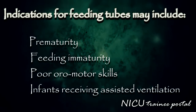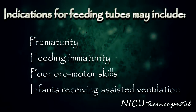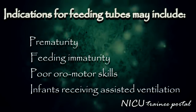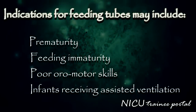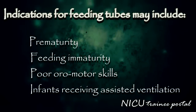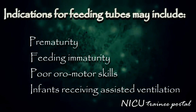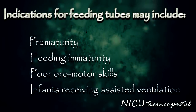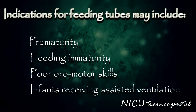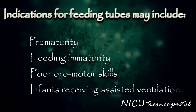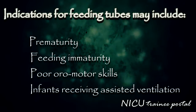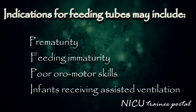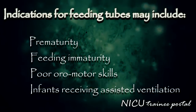Indications for a nasogastric or orogastric tube may include infants who are unable to take milk by the oral route due to prematurity, feeding immaturity, or neurological disease with poor oromotor skills, as well as infants who have respiratory distress with tachypnea.